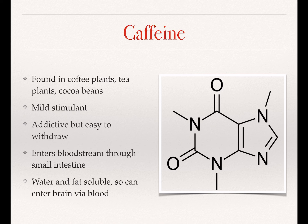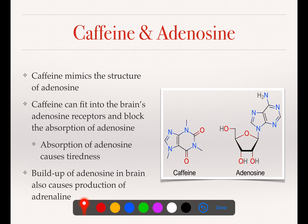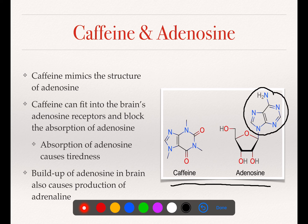Caffeine enters our bloodstream through our small intestine because we're eating it — once it gets into our small intestine, that's how it gets into our blood. Then once it's in our blood, it goes into our brain, where it does its magic. Caffeine in our brain mimics the structure of a molecule called adenosine. Here I have the structures of both caffeine and adenosine, and you can see that part of the adenosine molecule is pretty similar to the structure of the caffeine molecule. The adenosine molecule in our brain is associated with our feeling of tiredness.